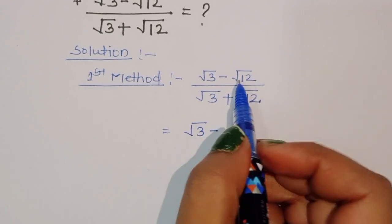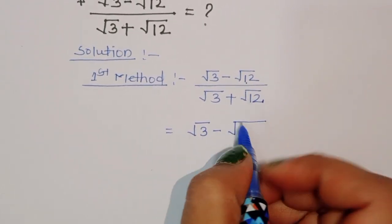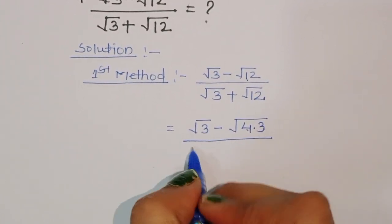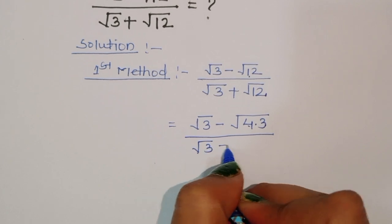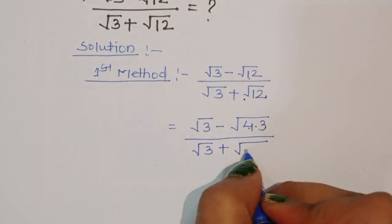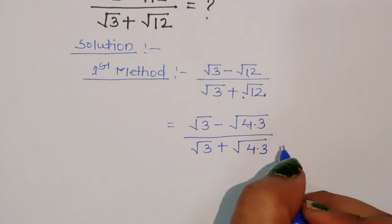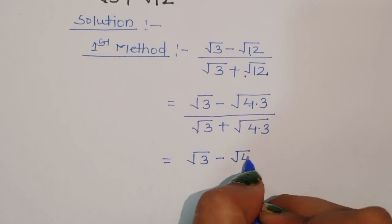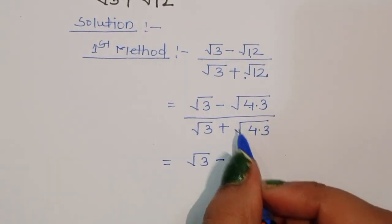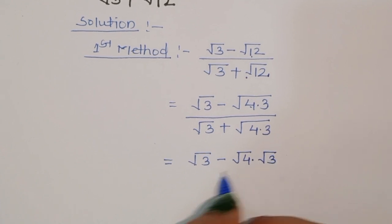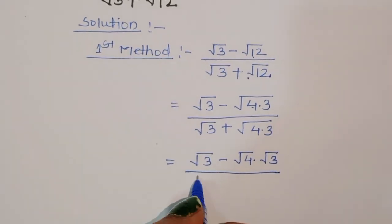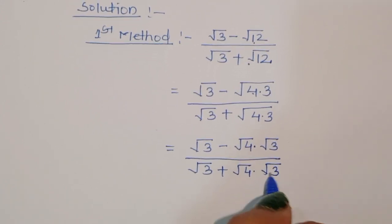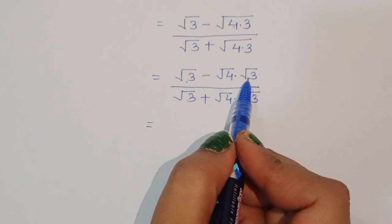First method: square root of 3 minus square root of 12 divided by square root of 3 plus square root of 12. We can rewrite square root of 12 as square root of 4 times 3, since 4 times 3 is 12. So we write square root of 4 times square root of 3 in both numerator and denominator.